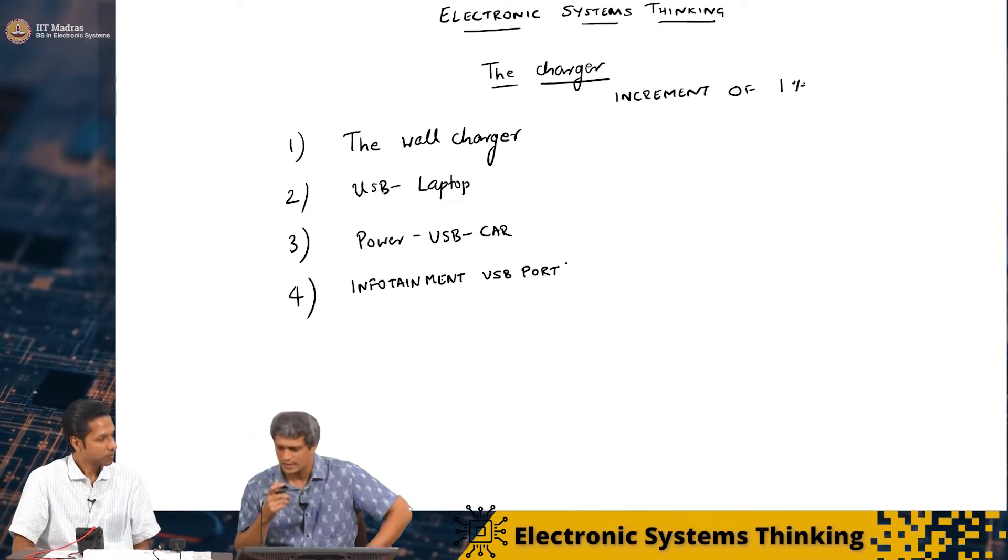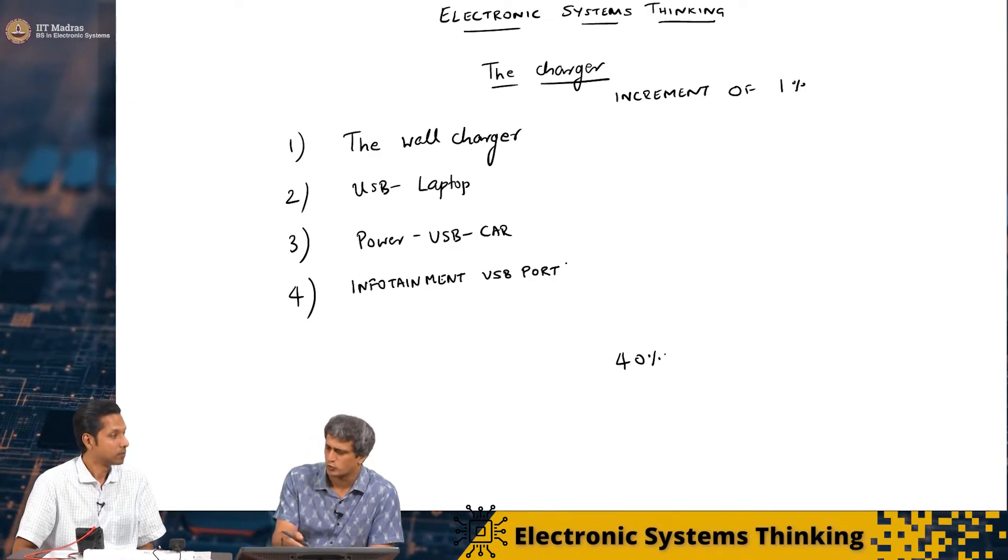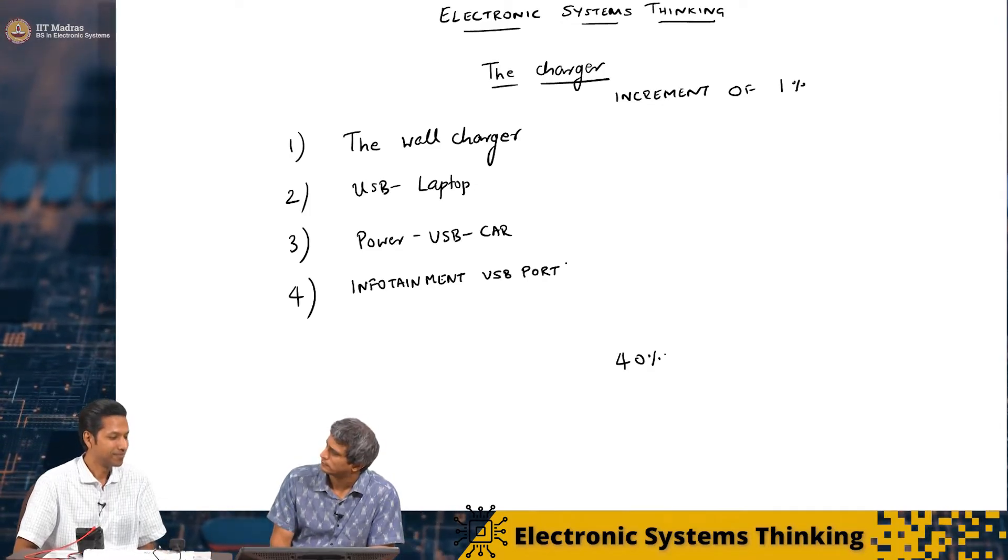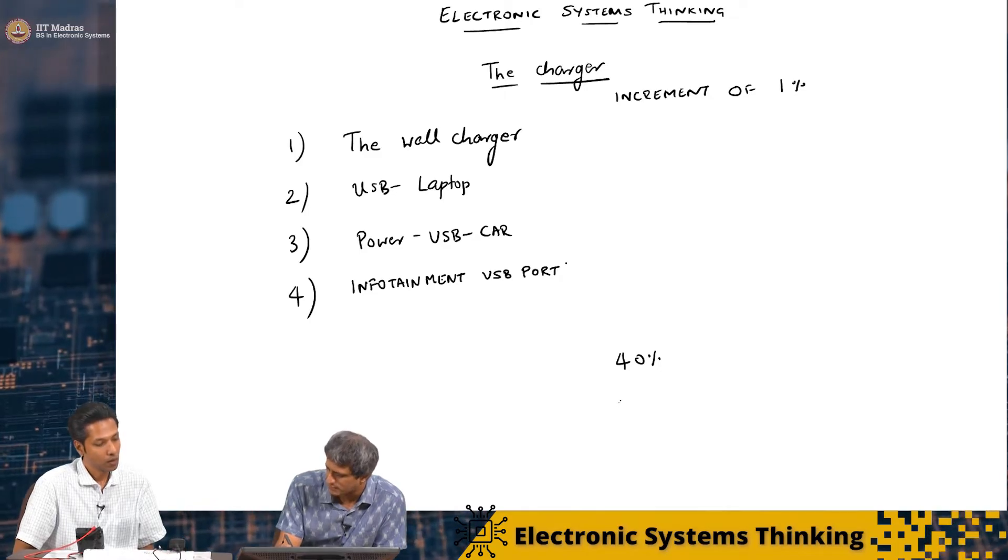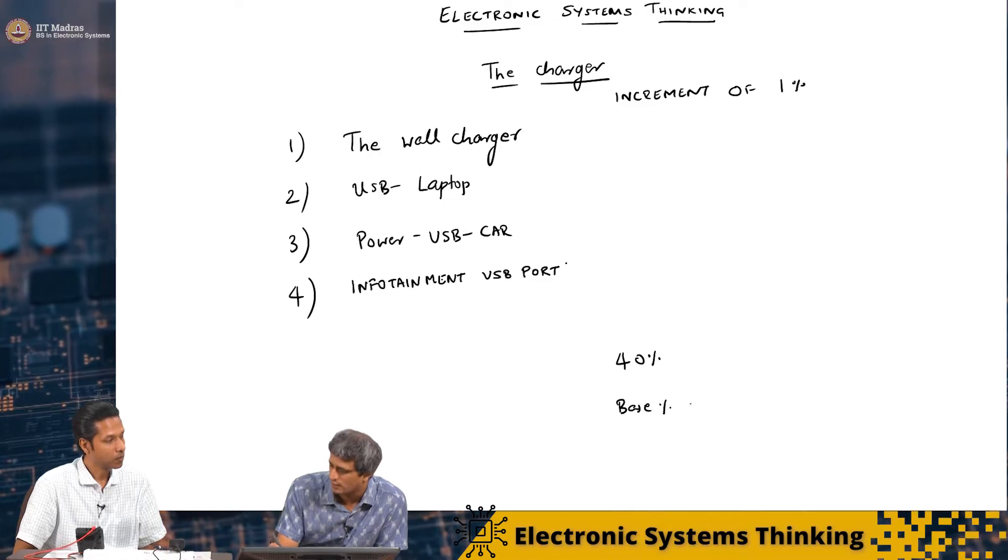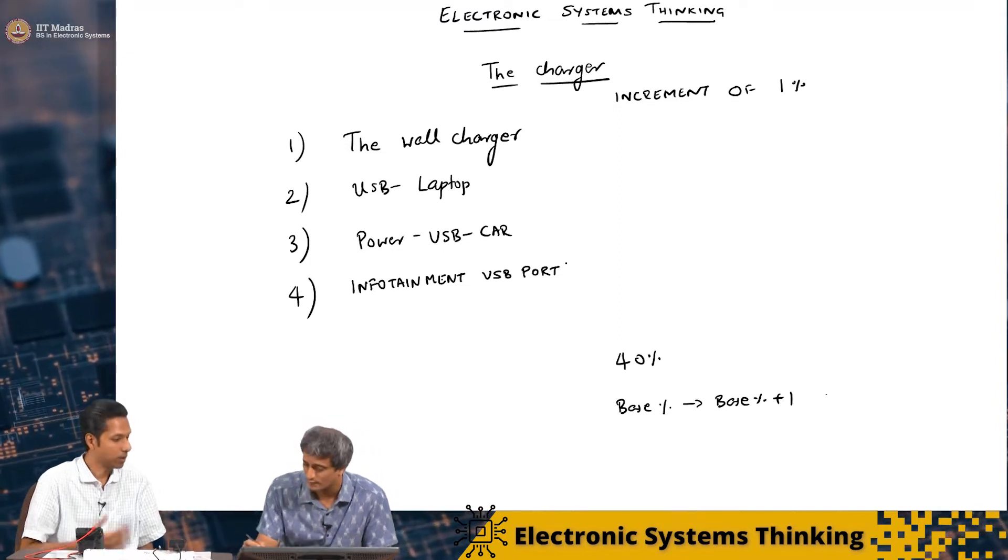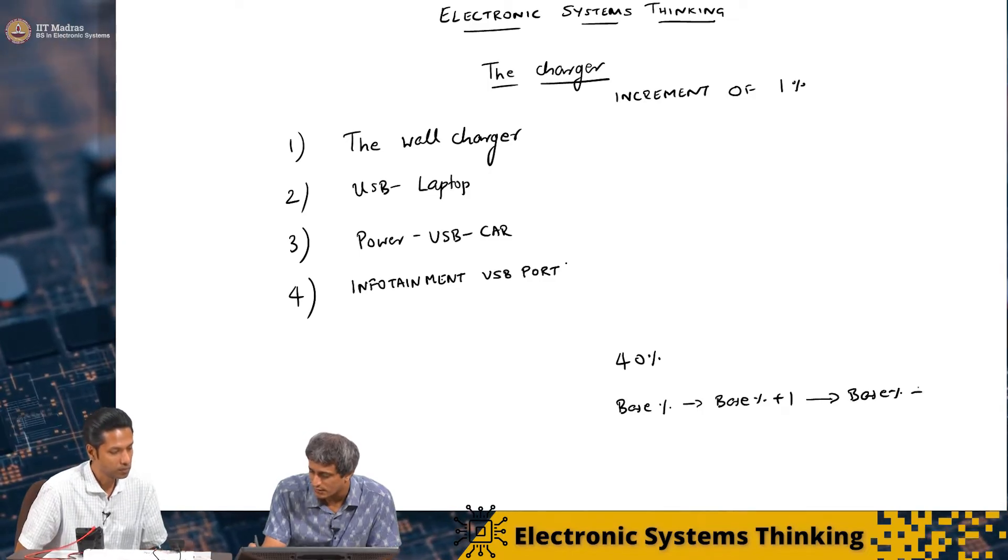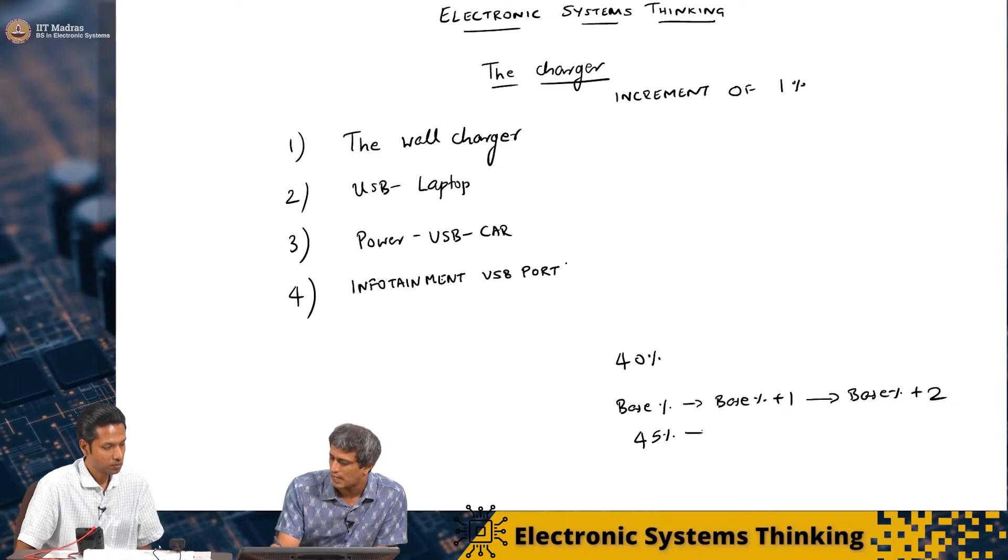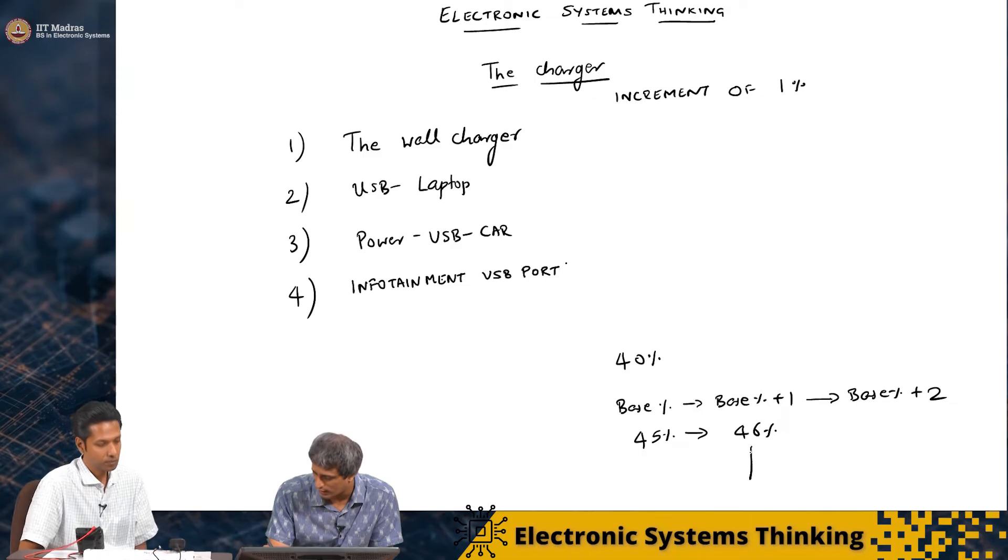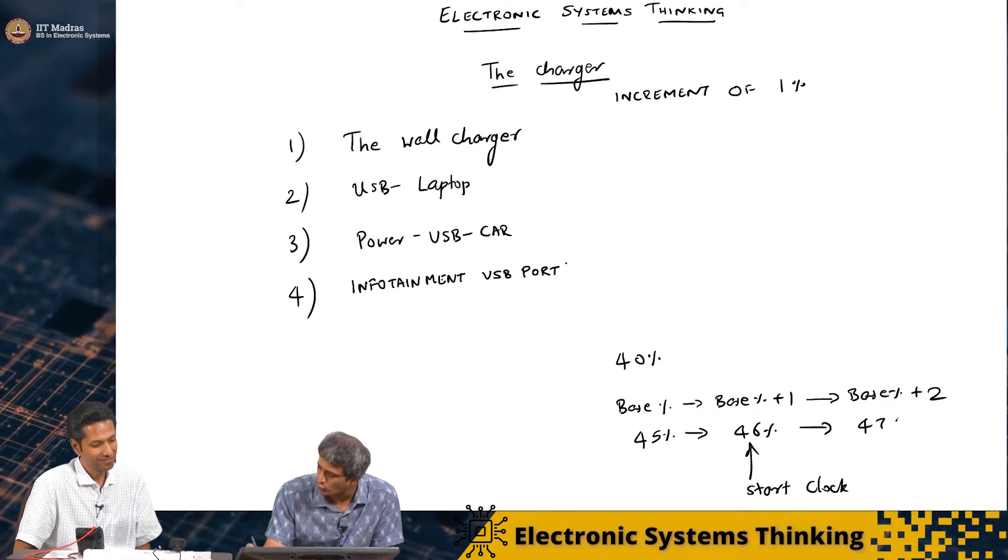But I think there's one more problem, right? Let's say that the mobile indicates that the charge is 40%. How do you know if it's close to 39 or 41? Difficult. Difficult, right? So what I'm going to do is each of these experiments, I'm going to wait from its base charge, okay? Base percentage, I will wait for it to increment by 1, okay? Base percent plus 1, and that's when I will start my clock, okay? And then this goes to base percent plus 2, right?